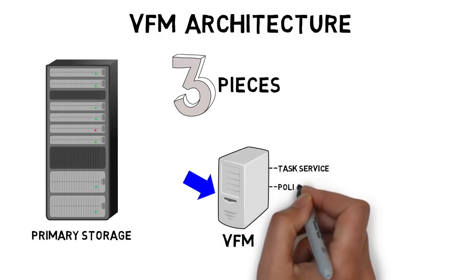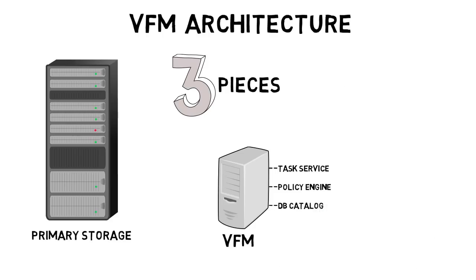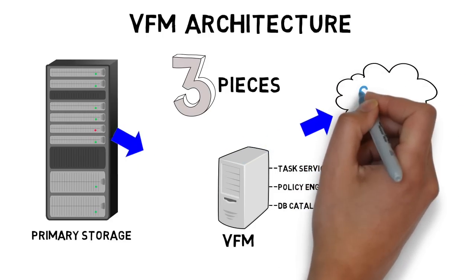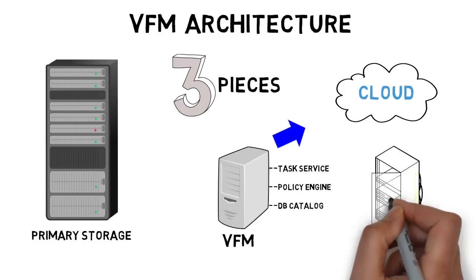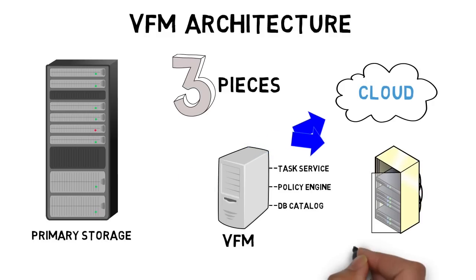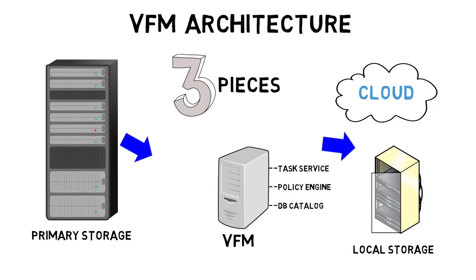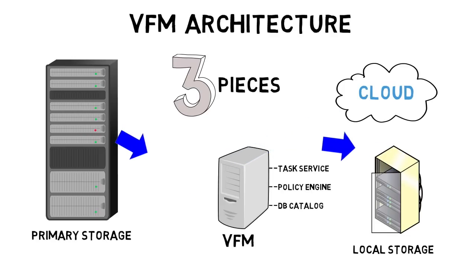The second architectural piece is the policy engine, which is a website that gives you the ability to configure policies. It's an easy one-stop place to manage all of your tasks and services and set forth policies for tiering data off the primary tier. The third and final architectural piece is a back-end catalog, which is an open Microsoft SQL Server database. All information about tiering and rehydrating data is kept inside this catalog for data mining and reporting.